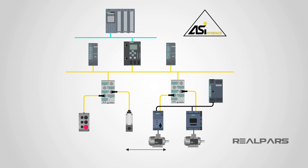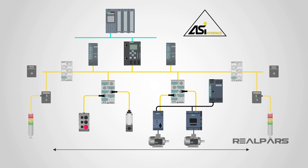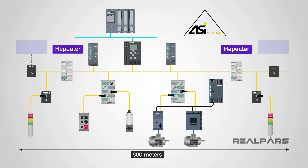The range of a typical AS Interface device is around 100 meters, or up to 600 meters with repeaters and extension plugs, making it extremely useful for remote locations.